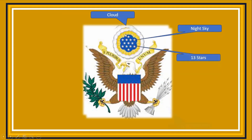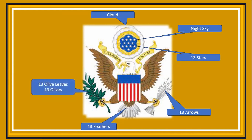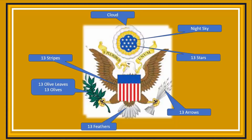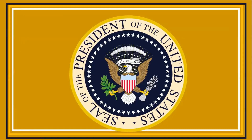There are 13 stars on the symbol, 13 arrows, and 13 feathers in the tail feathers of the eagle. There are also 13 olive leaves and 13 olives, and you also have the 13 stripes. Do you see the number 13 and how it's appearing? We know that there were also 13 colonies to start with.